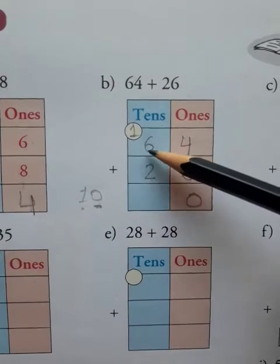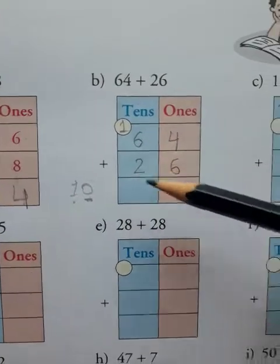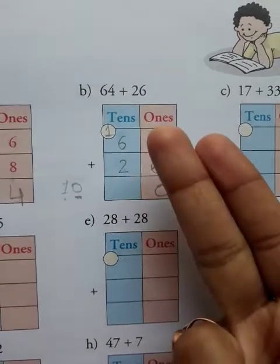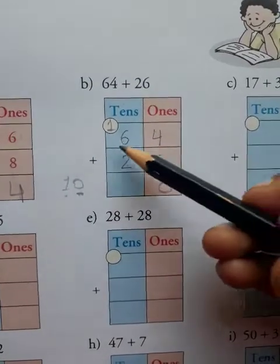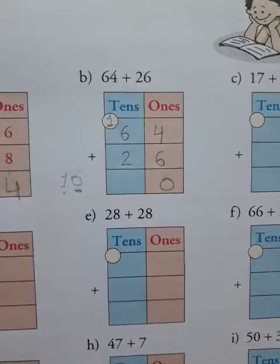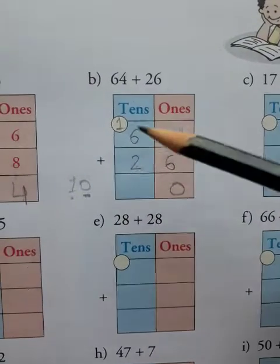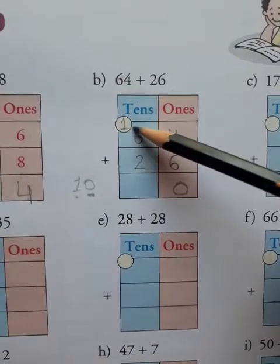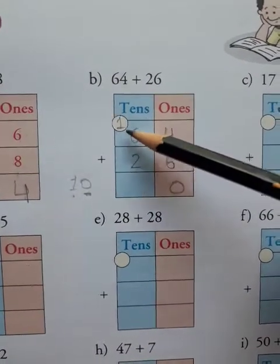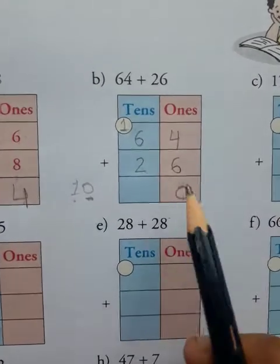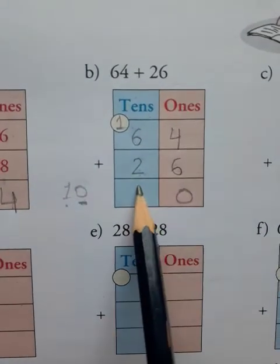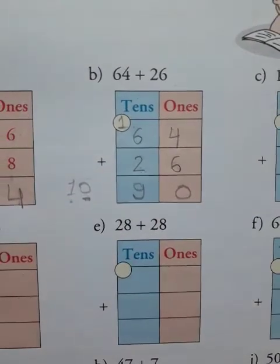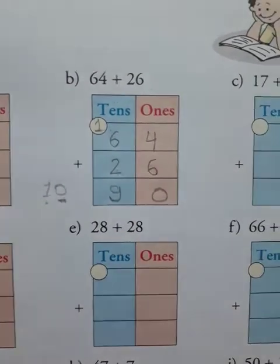Now, 6 plus 2 is equal to 8. But you also add the carry over: 8 plus 1 is equal to 9. So you write here 9. So 64 plus 26 is equal to 90.